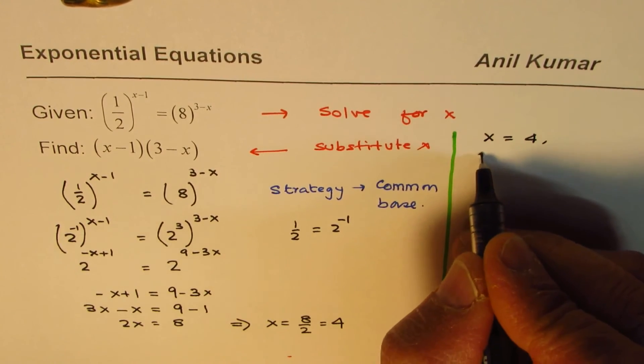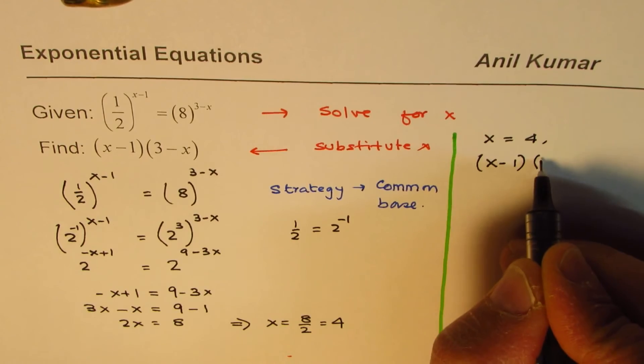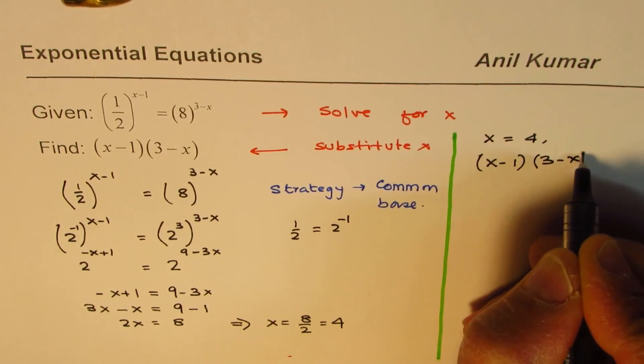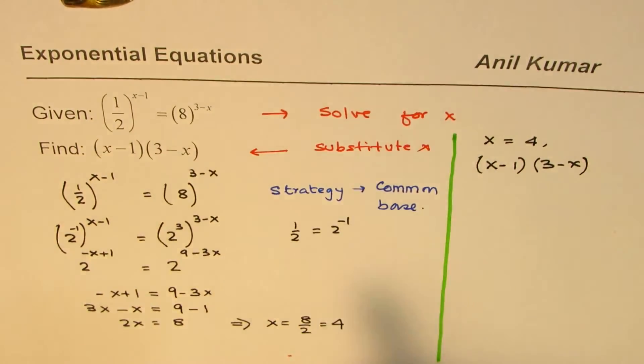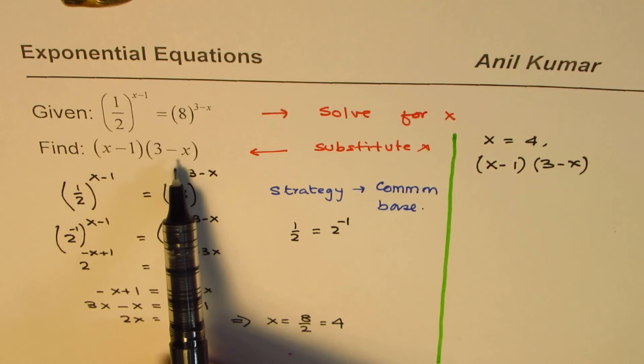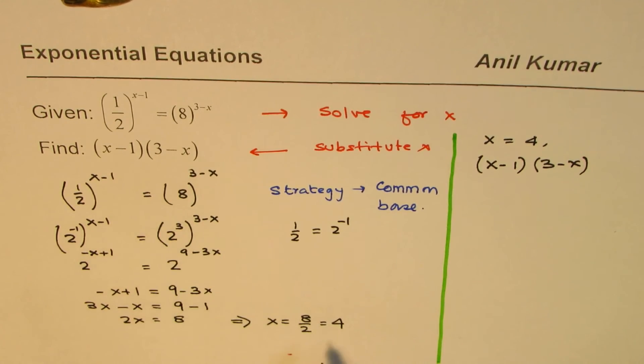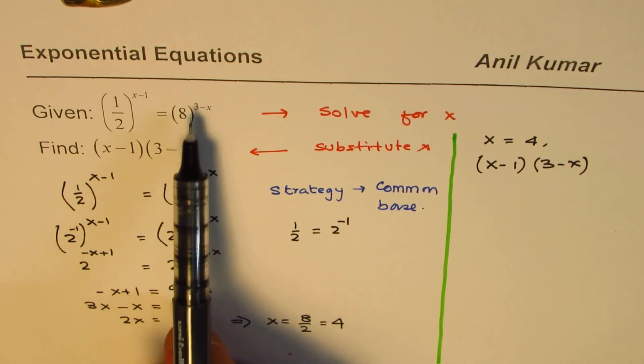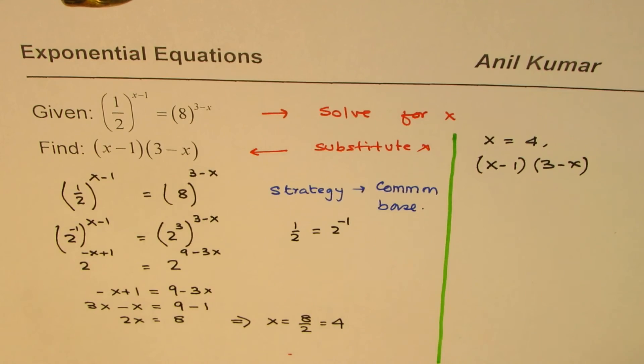And we need to find what is the product of (x-1) and (3-x). So these are the exponents, right? So when you give such values, at times you get puzzled like what to do now, how are they related with this solution? It's kind of straightforward. First you find the value of x, substitute, and get your answer.